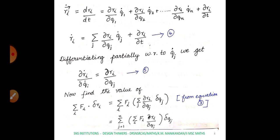Differentiating ri-dot partially with respect to qj-dot, we get ∂ri-dot/∂qj-dot. Since only the qj term contributes and qj-dot differentiated with respect to qj-dot equals 1, we get ∂ri-dot/∂qj-dot = ∂ri/∂qj — call this equation 5.